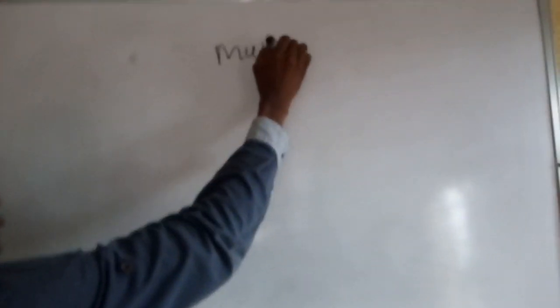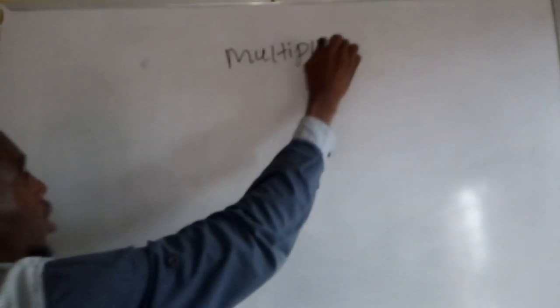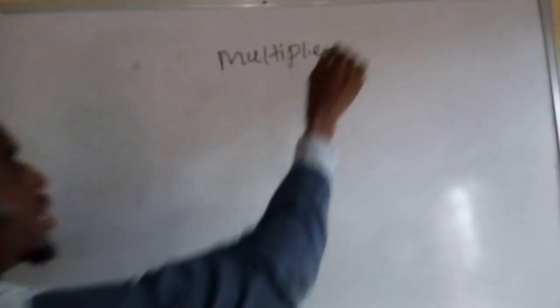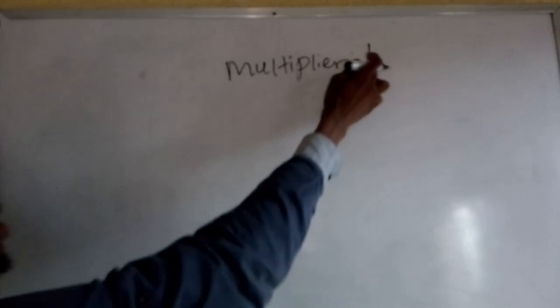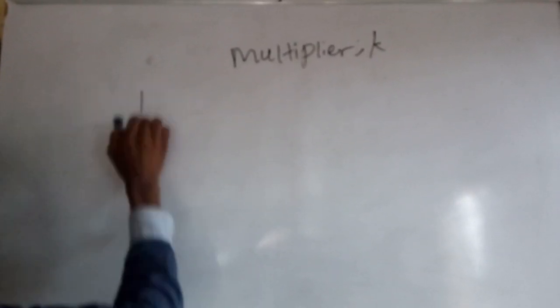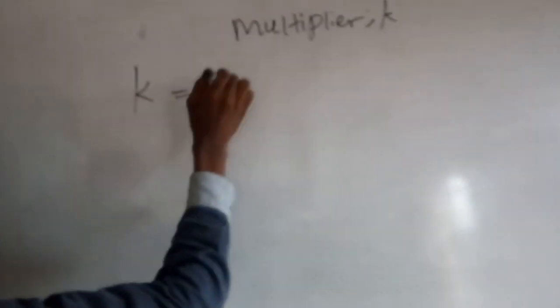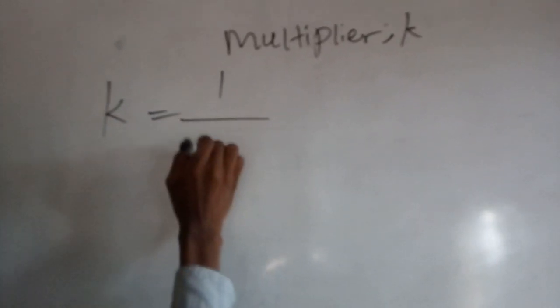In this video, we want to look at the various methods of calculating the multiplier. The multiplier in economics is denoted as K, so wherever you see K, K means the multiplier.